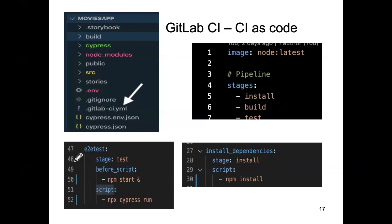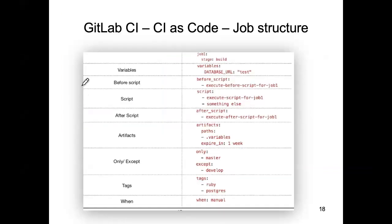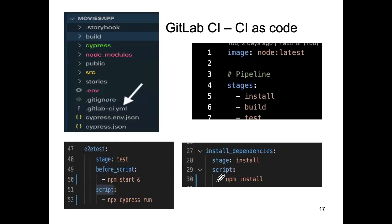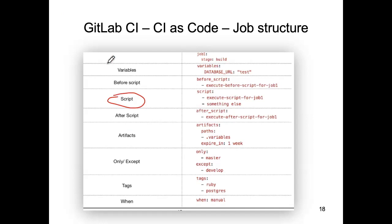A job has a number of structural parts. Many of which we don't use, but I'm giving you the full set. The main part is the scripts section — that's where you encode the set of shell or terminal commands you want executed for this particular job associated with a particular stage. You can see the script section in the examples on the previous screen.